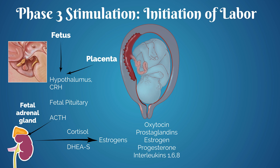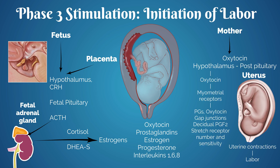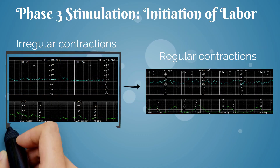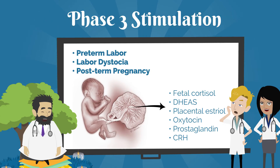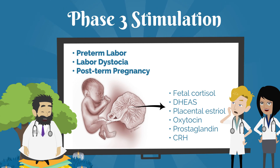Estriol enhances maternal decidual transcription of PGF2-alpha, prostaglandin, and oxytocin receptors, and gap junction formation in the myometrium. During phase three, stimulation, endocrine, autocrine, and paracrine factors from the fetal-placental unit transform irregular contractions to regular contractions. Phase three is one of the most complex phases, and pathology here can lead to preterm labor, labor dystocia, and post-term pregnancies.